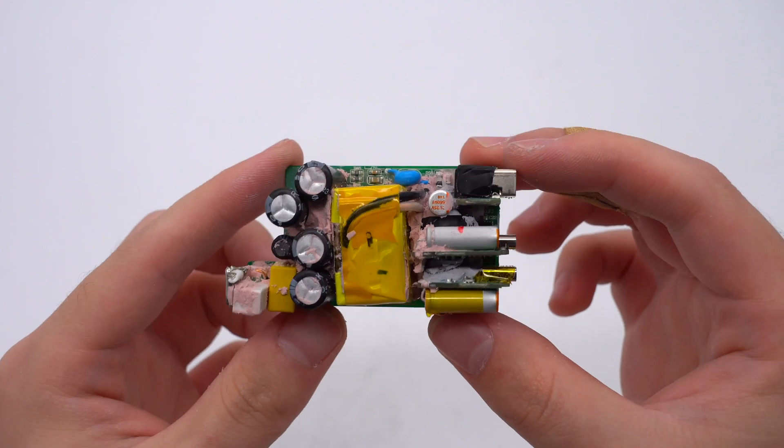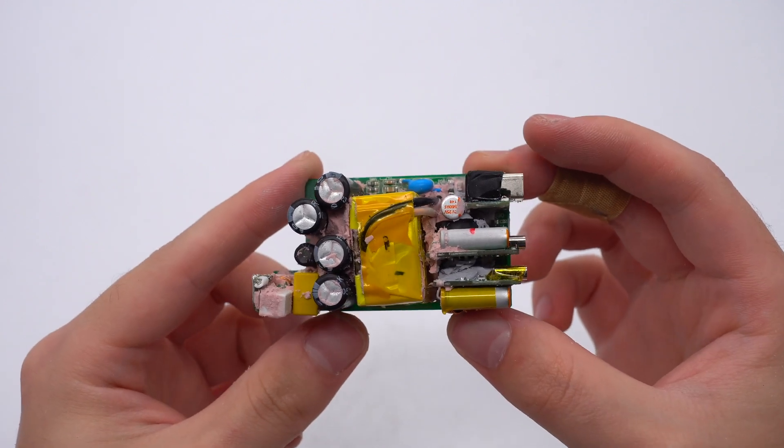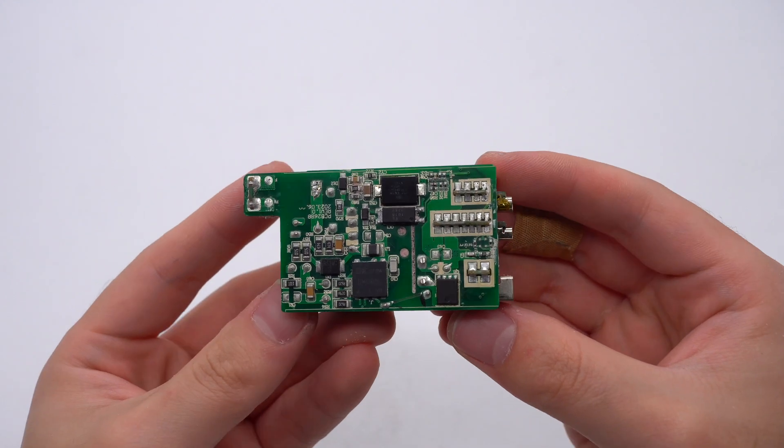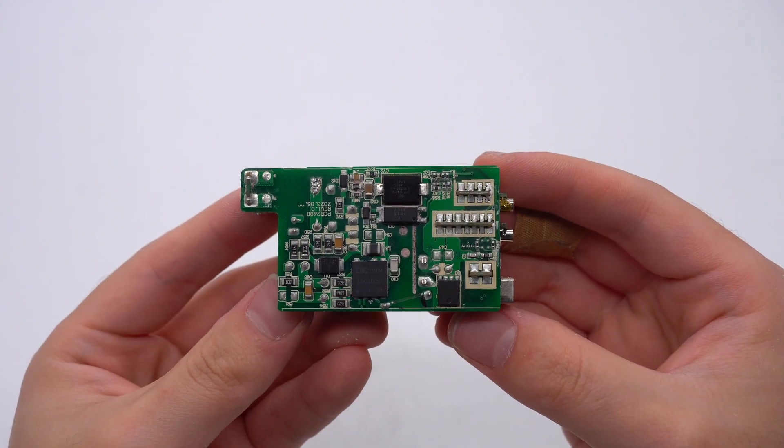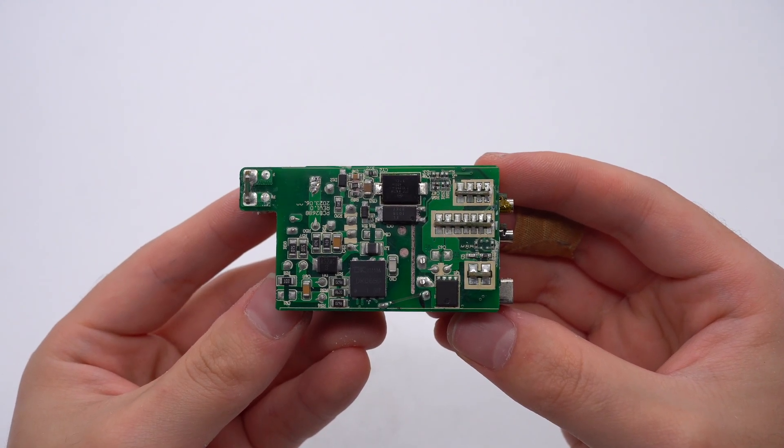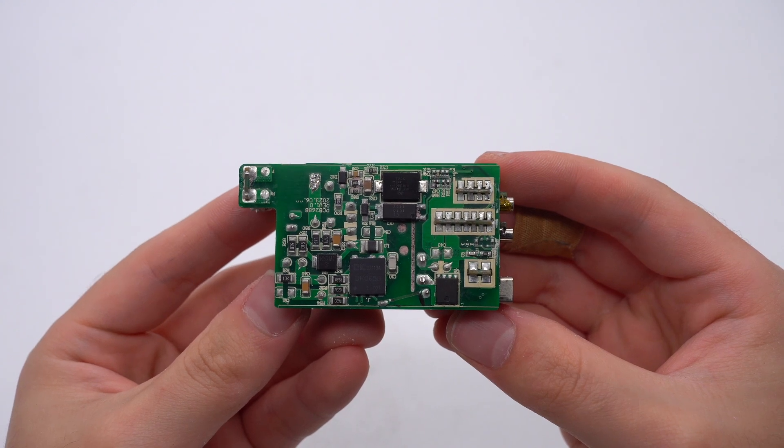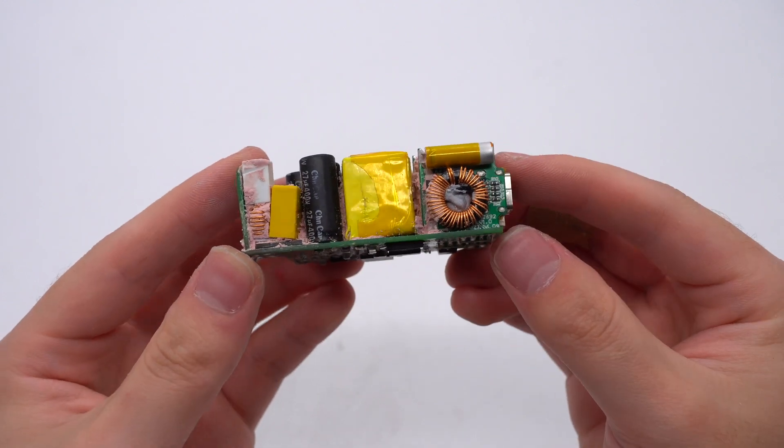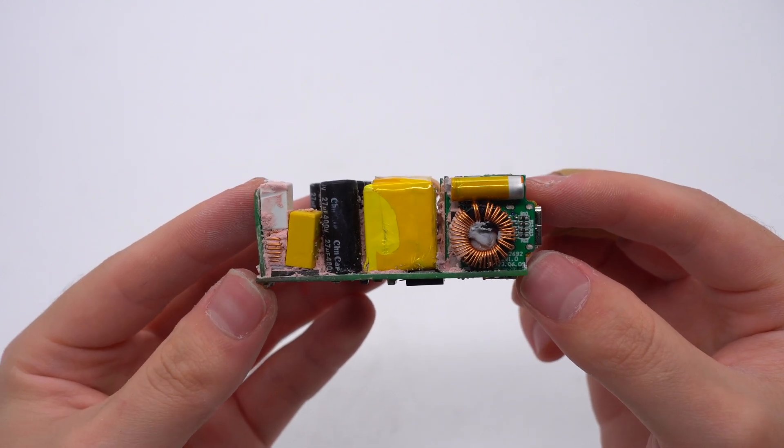There are fuse, common mode choke, transformer, capacitors and buck PCBs on the front. The master control chip, optocoupler, SMD Y2 capacitor and synchronous rectifier are on the back. ChargerLab found it adopts two independent buck circuits with fixed output voltage. Next, we'll take a look at each component starting from the input end.